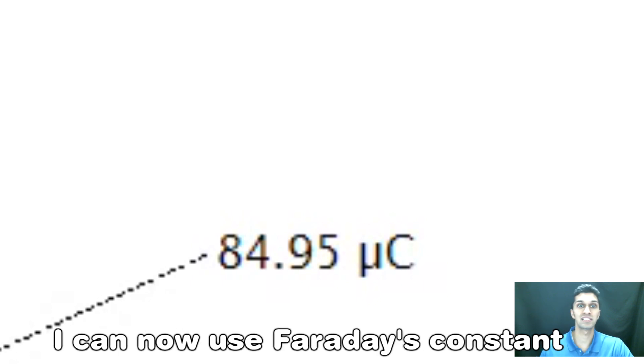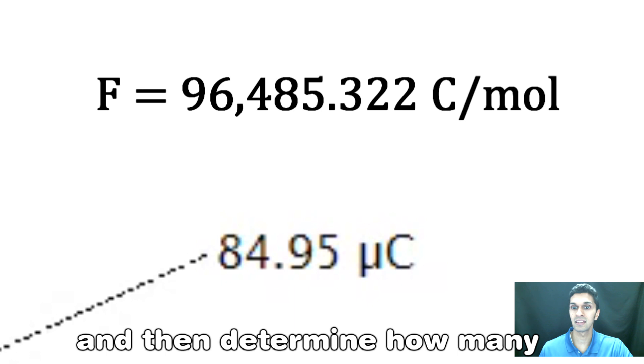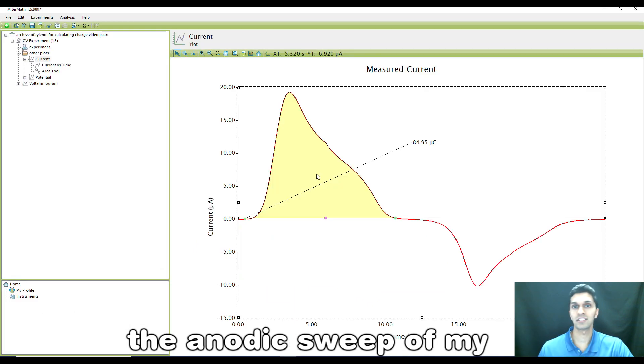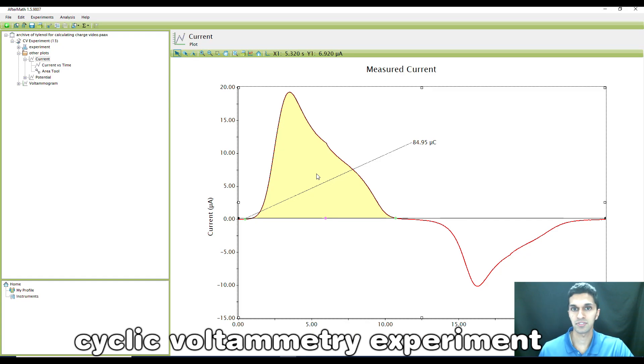I can now plug that in, use Faraday's constant and then determine how many molecules were actually passed during the anodic sweep of my cyclic voltammetry experiment.